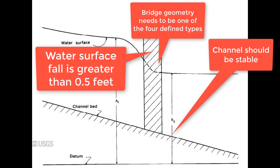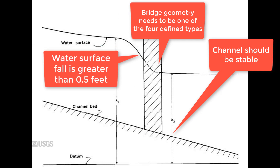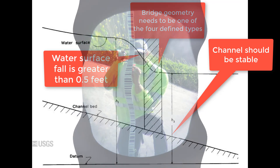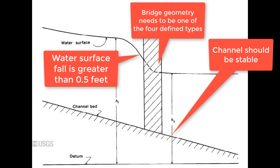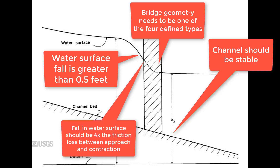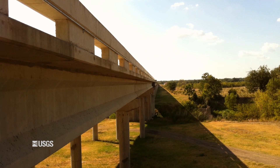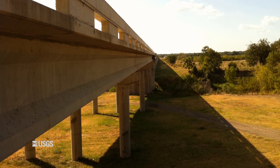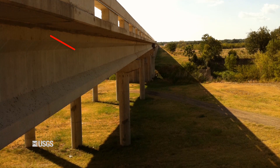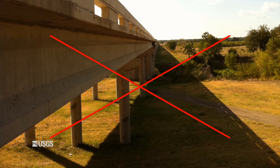Three, the fall in water surface should be greater than 0.5 feet between the approach section and the contracted section. An easy way to measure this is to quickly shoot a high water mark on both the upstream and downstream embankments. If it is less than 0.5 feet, the resulting discharge may be inaccurate. Four, the fall in water surface should be at least four times the friction loss between the approach section and the contracted section. An example of this would be a very wide bridge downstream of a heavily wooded approach section — the fall through the bridge would not be as substantial as the head losses in the approach section. Therefore, this would not be a suitable location to perform a contracted opening indirect measurement.